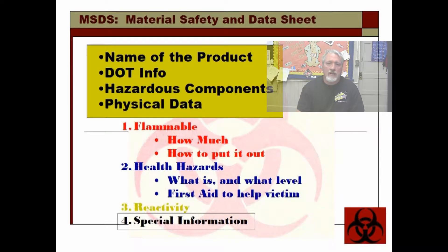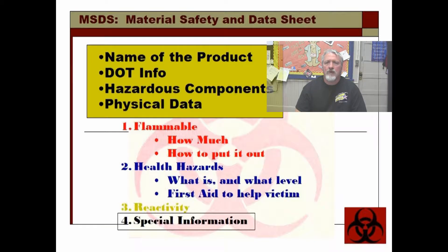First of all, looking at the MSDSs, there's a sample in your module. You can look at — I think it's a sample of alcohol, rubbing alcohol, isopropyl 70%, something like that. That is the sample inside your module. You can also look at additional ones in the safety manual, or you can bring one up online to see what an MSDS sheet looks like.